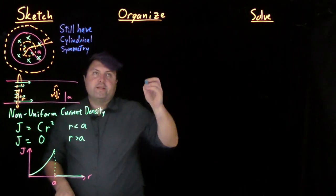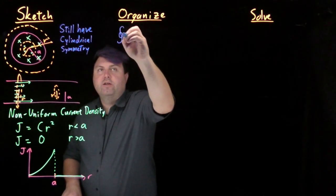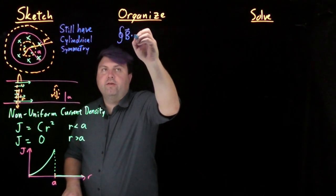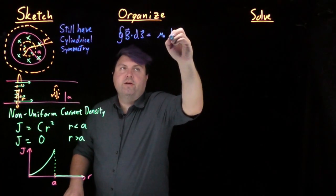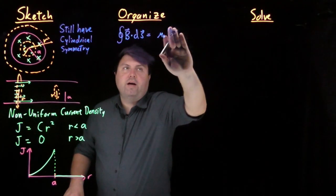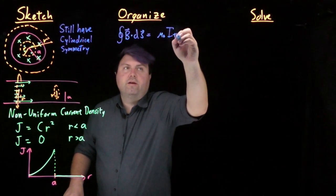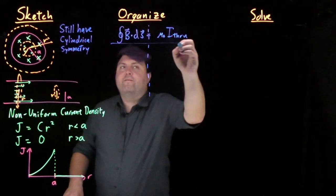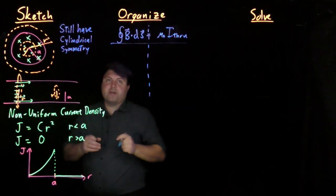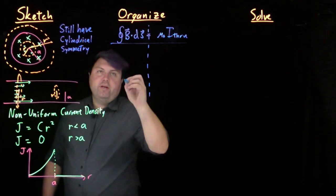In our organized step, we have Ampere's law, which is that our path integral of b dot ds is equal to mu naught times the current i that passes through. Now, we're going to solve kind of both sides of this.